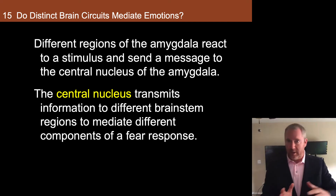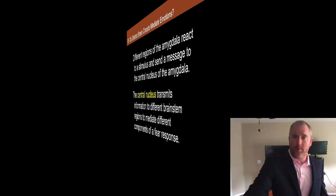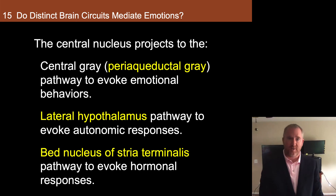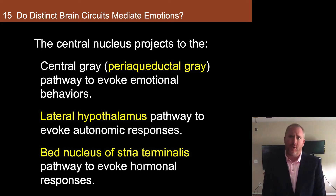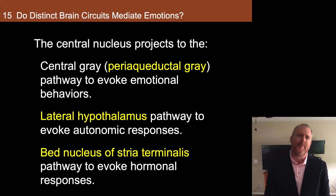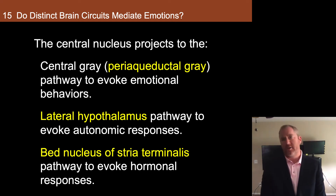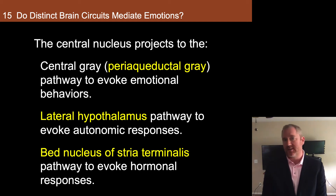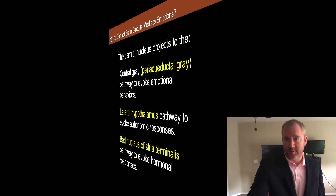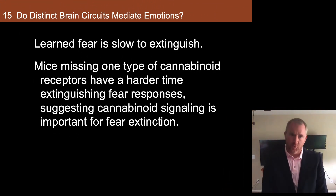Those components are emotional, autonomic, and hormonal. The central nucleus projects to the central gray, also known as the periaqueductal gray, a brain region also known to be involved in opioid-induced analgesia, and this region is involved in processing emotional responses associated with fear circuitry. The lateral hypothalamus is involved in evoking autonomic responses, and the bed nucleus of the stria terminalis is involved in evoking hormonal responses. Learned fear is slow to extinguish, and avoidance behavior is even slower — in fact, very difficult to extinguish at all.